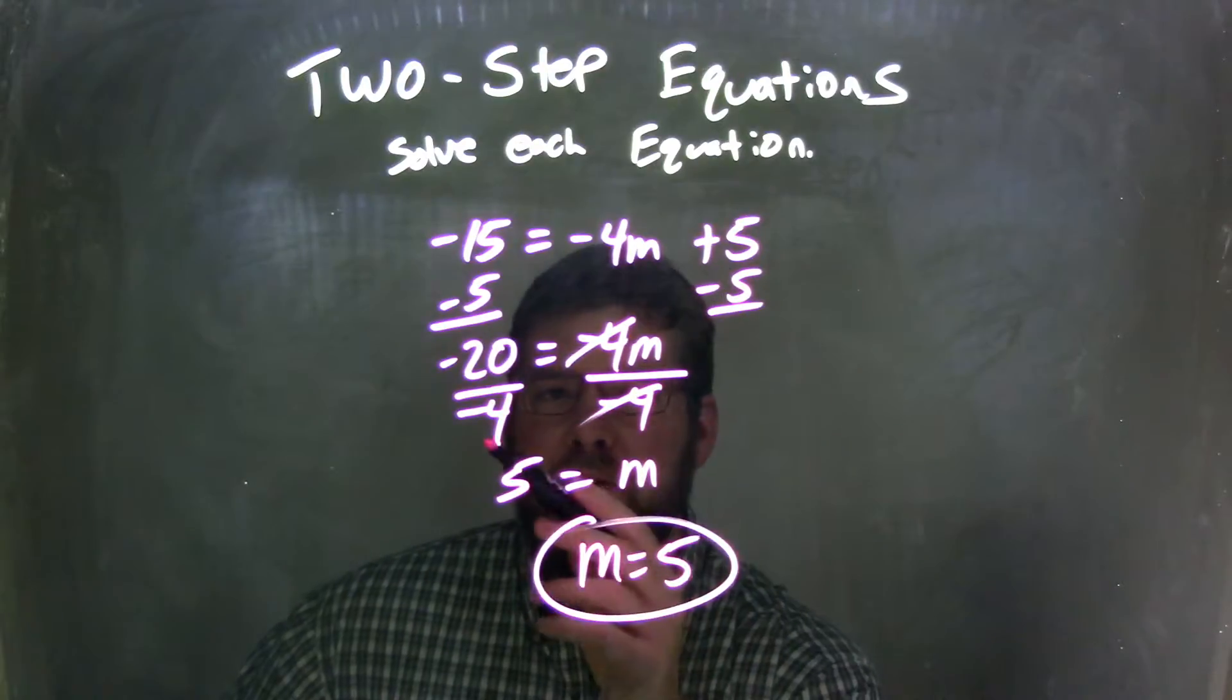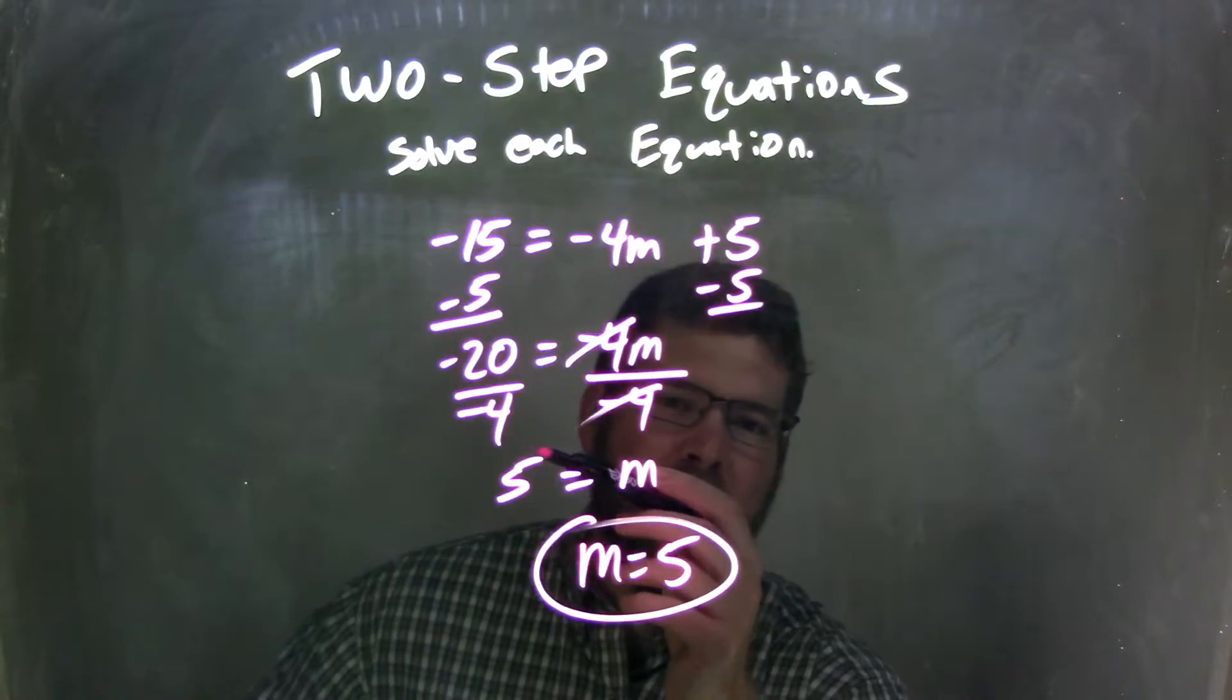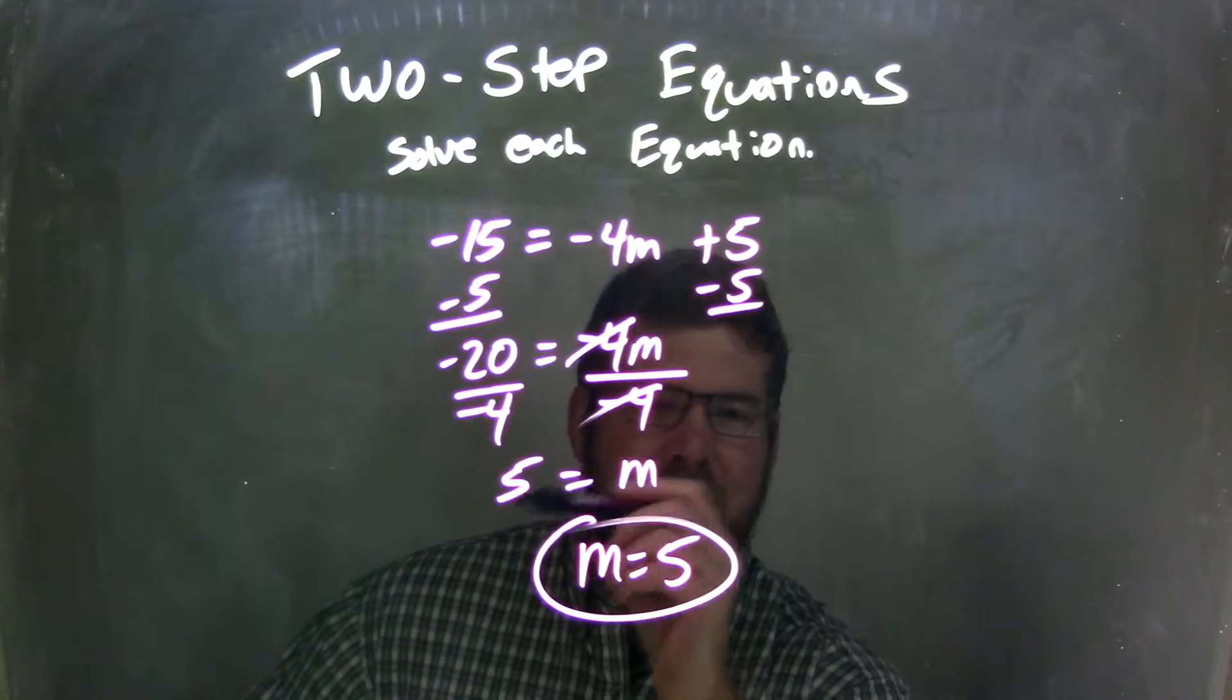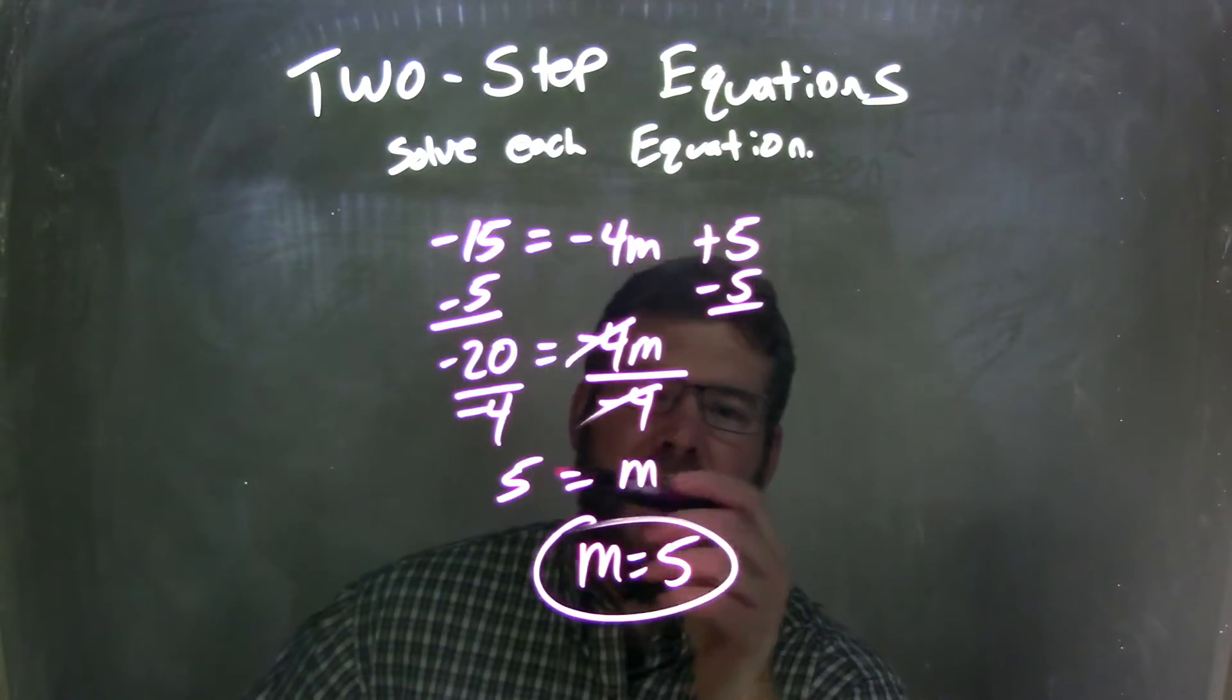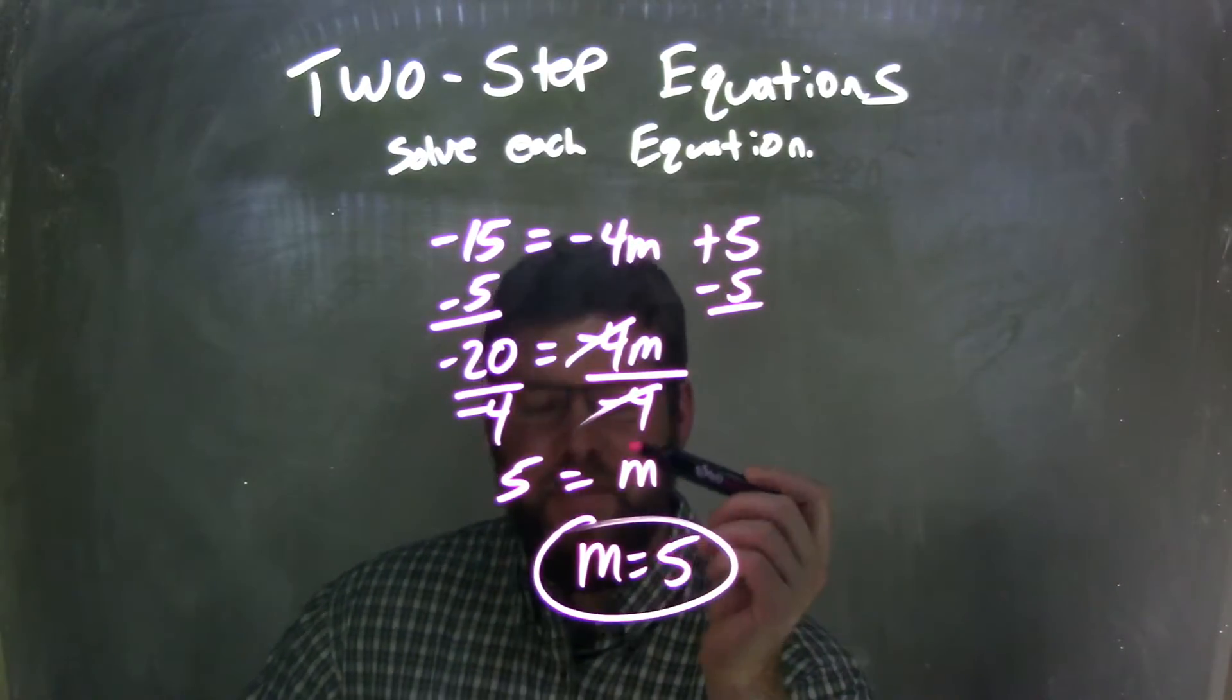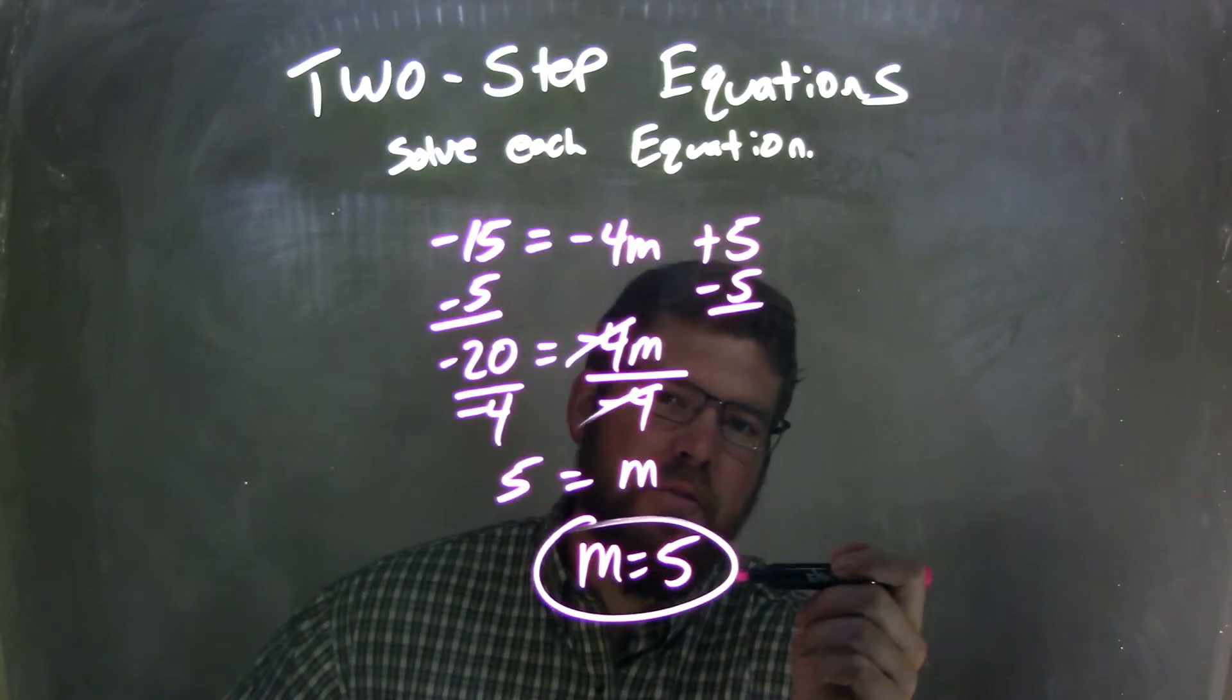I divide by negative 4 on both sides. Negative 4 is canceled, right? Leaving me with just m. And negative 20 divided by negative 4, because a negative divided by a negative is positive, this comes out to be 5. So 5 equals m. I rewrote that to make it look a little nicer with m first, and the final answer is m equals 5.